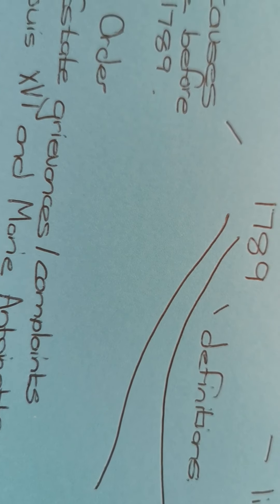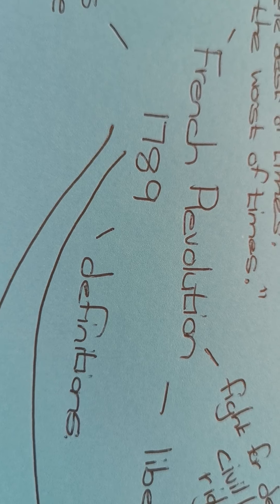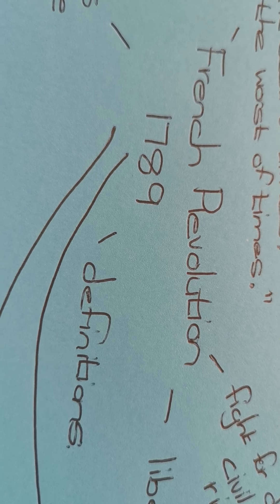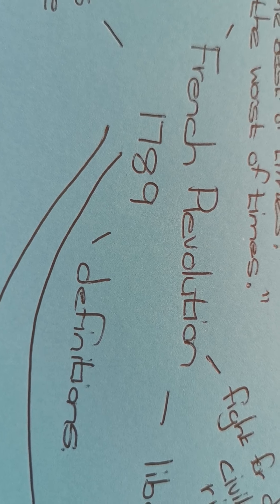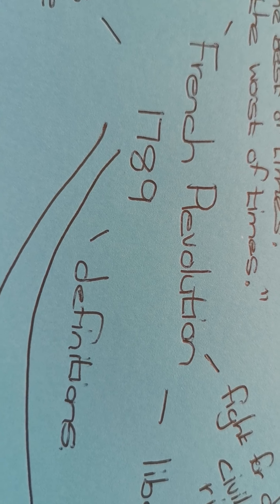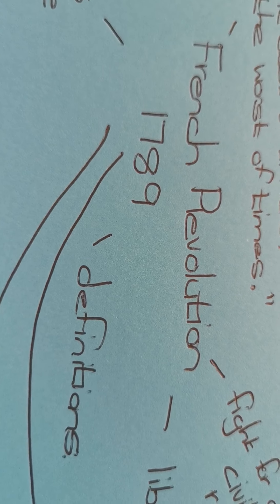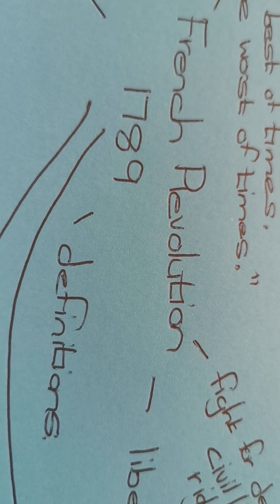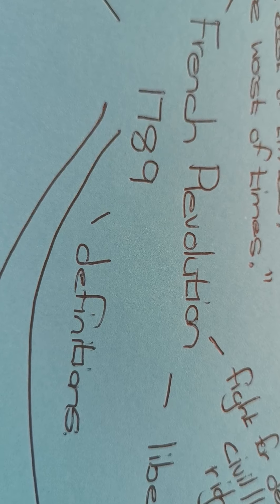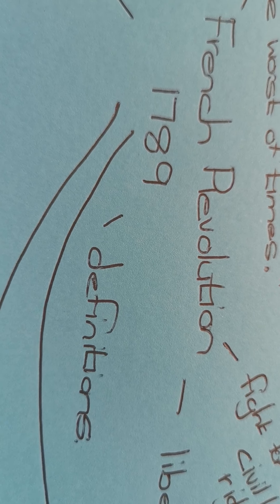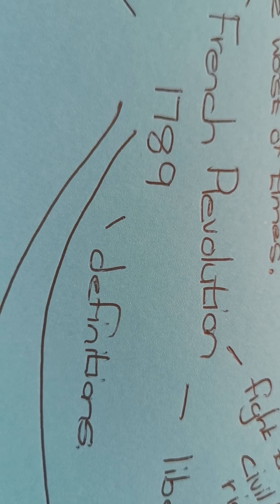Let's take a look at the definitions that you would need to know. For definitions, you want to be able to define the French Revolution, and then when there's big words that you don't understand, you want to put that onto a list. So for example, there's the names of the different taxes. If you put it on a list and you say to yourself, well that's a tax that the third estate paid, then it would make more sense to you.